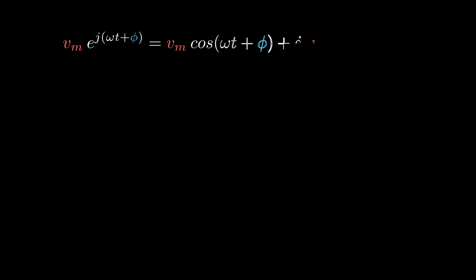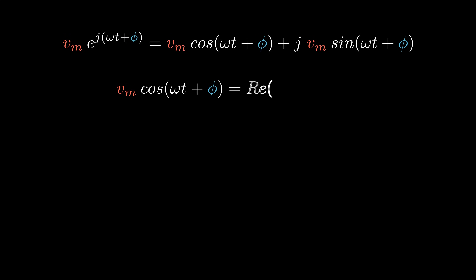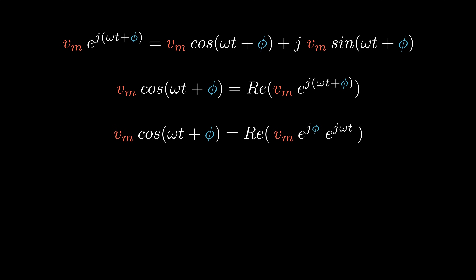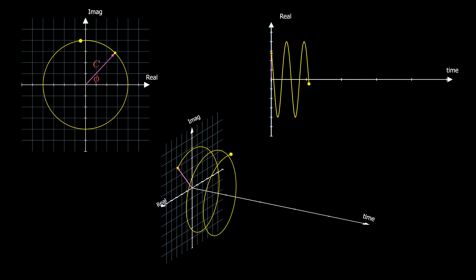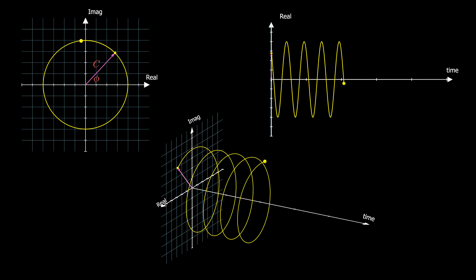Recall from Euler's formula: cosine is the real part of the complex exponential function and can be expanded into that form. This factor is known as the phasor representation of the sinusoid. Phasor is a complex representation of the magnitude and phase of the sinusoid. Phasor represents a vector in a complex plane with magnitude C and phase phi. Phasor is equal to the complex exponential when time is zero — you can think of it as the point at which the complex exponential starts to rotate.